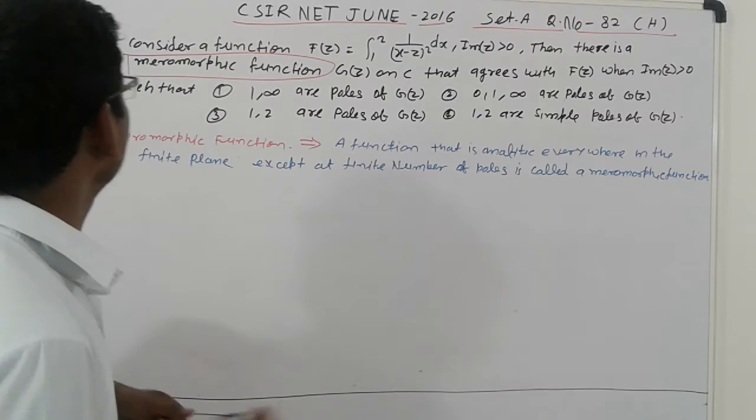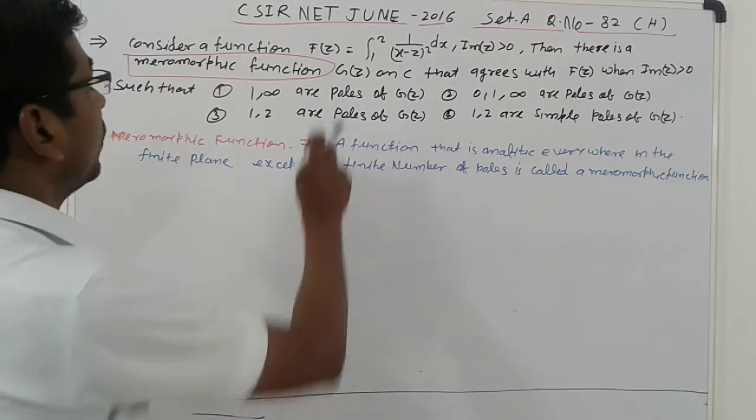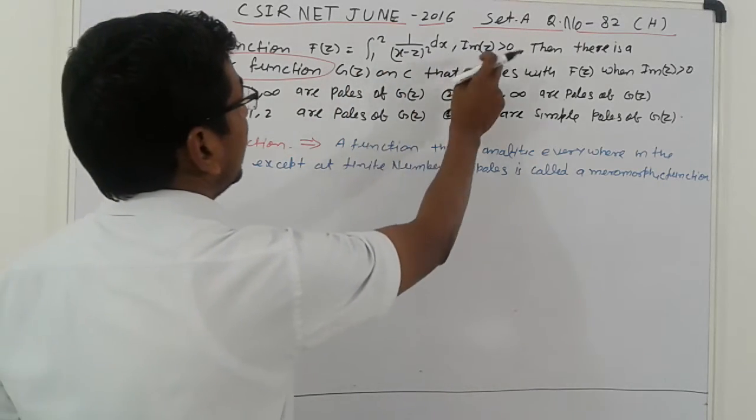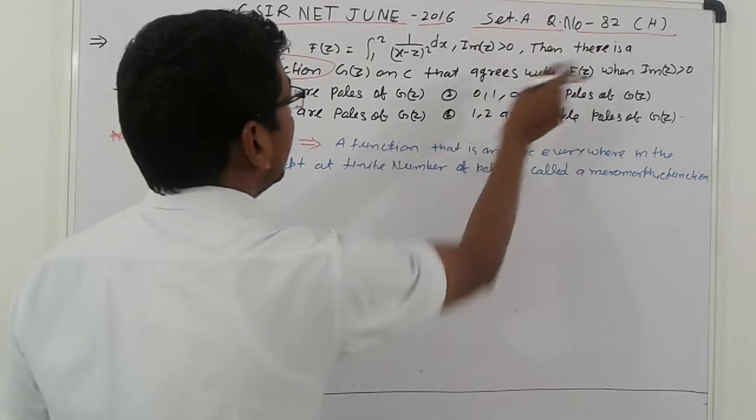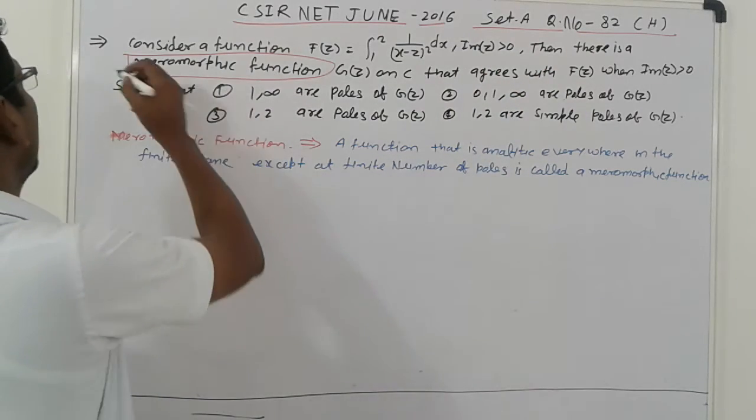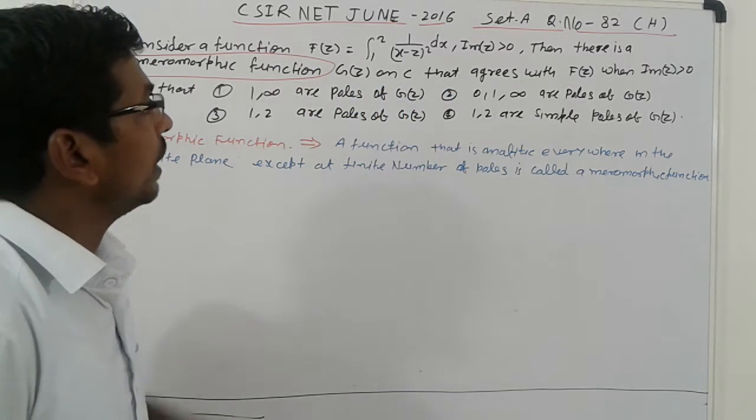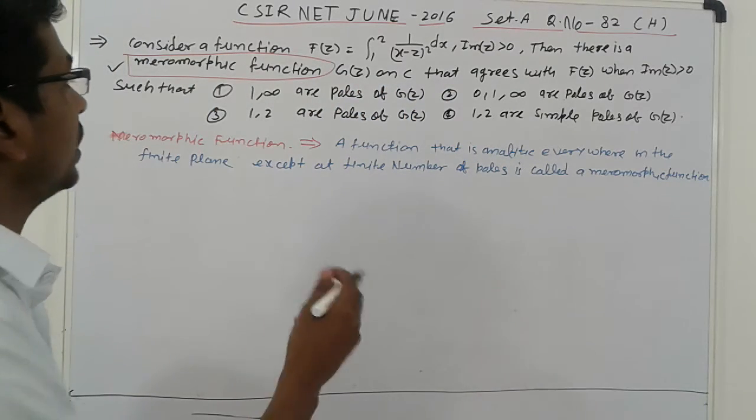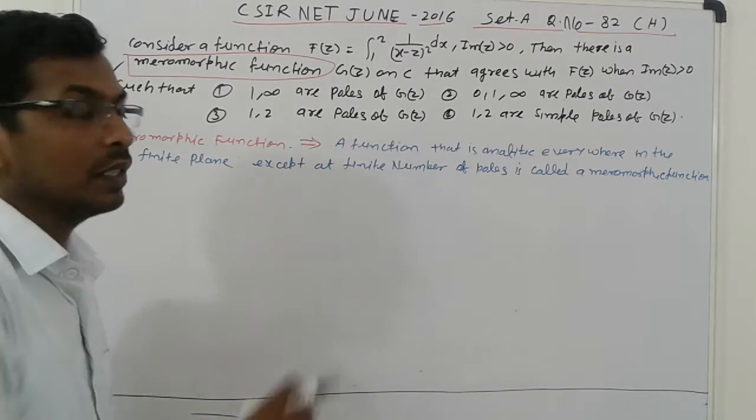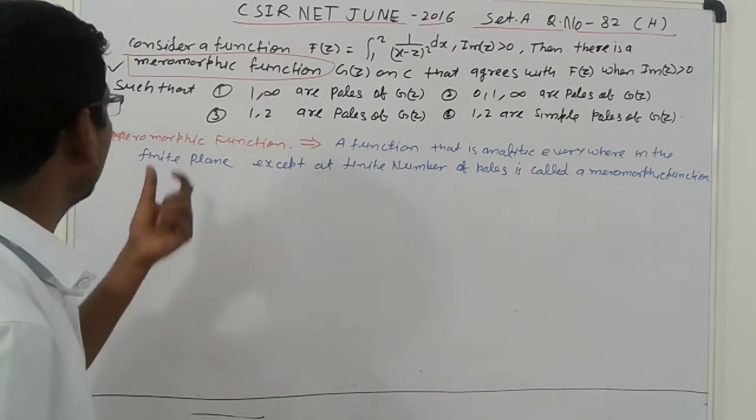So now let's go to this. Given a considerable function f of z, one to two, integral dx, imaginary of z equal to zero, then there is a meromorphic function. It is important here. G(z) on C that agrees with f of z, and four options are here. What is the meromorphic function?